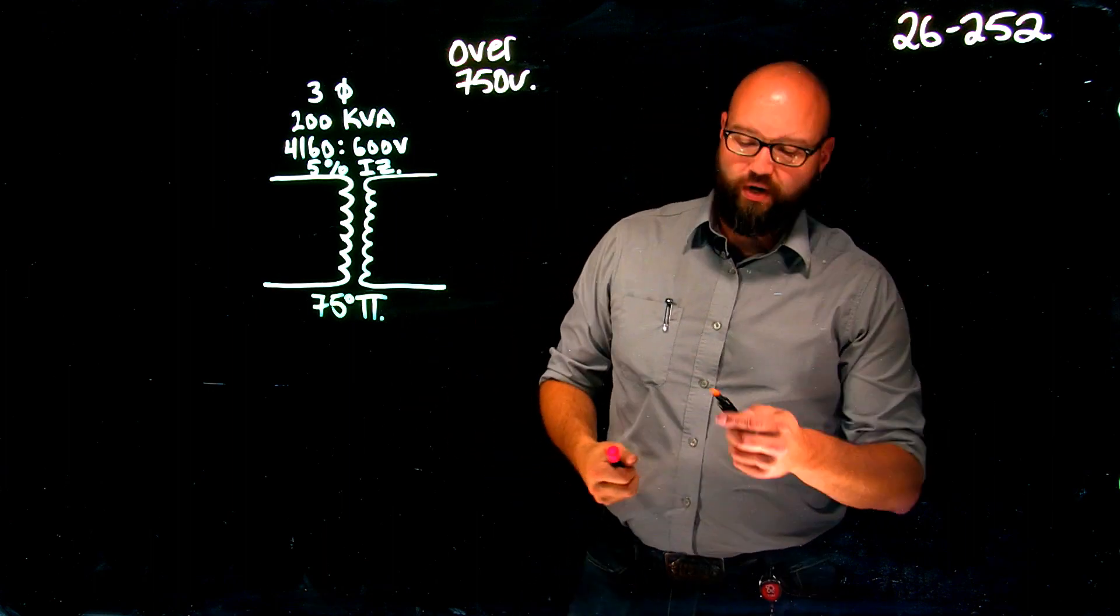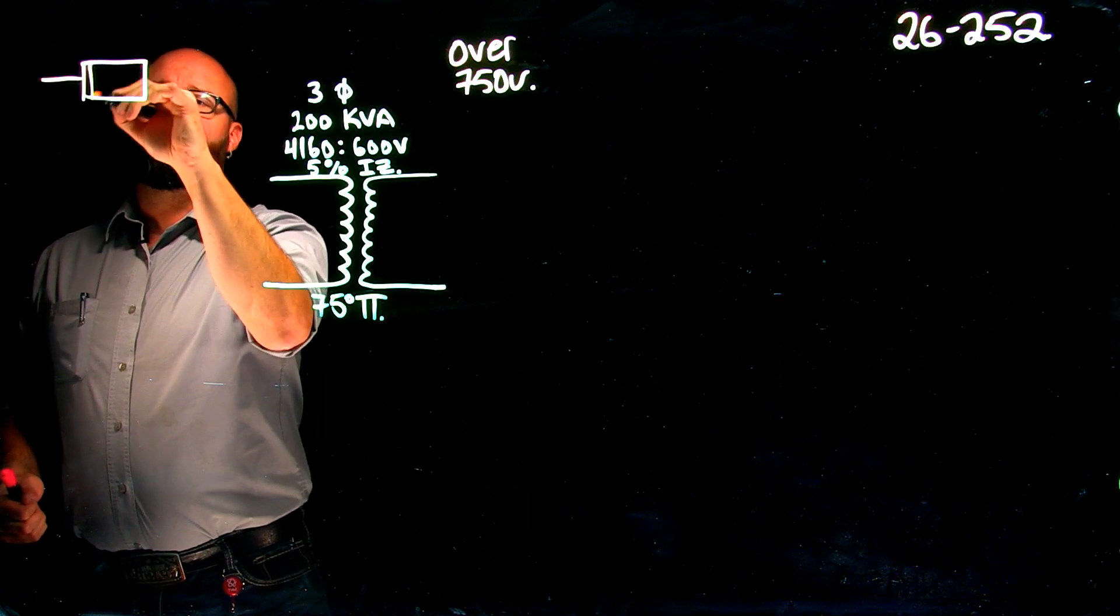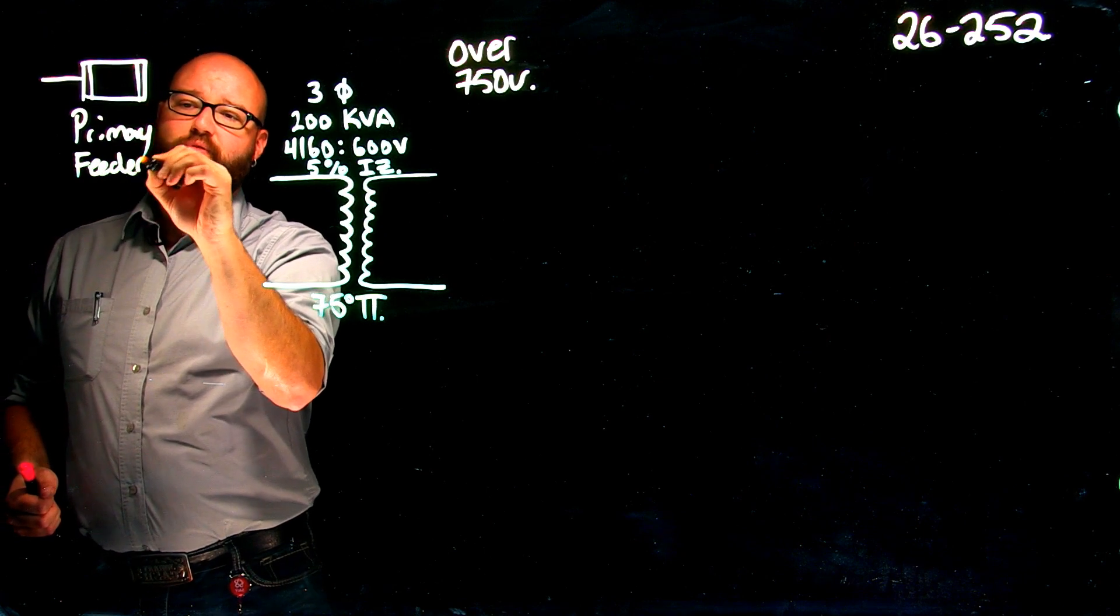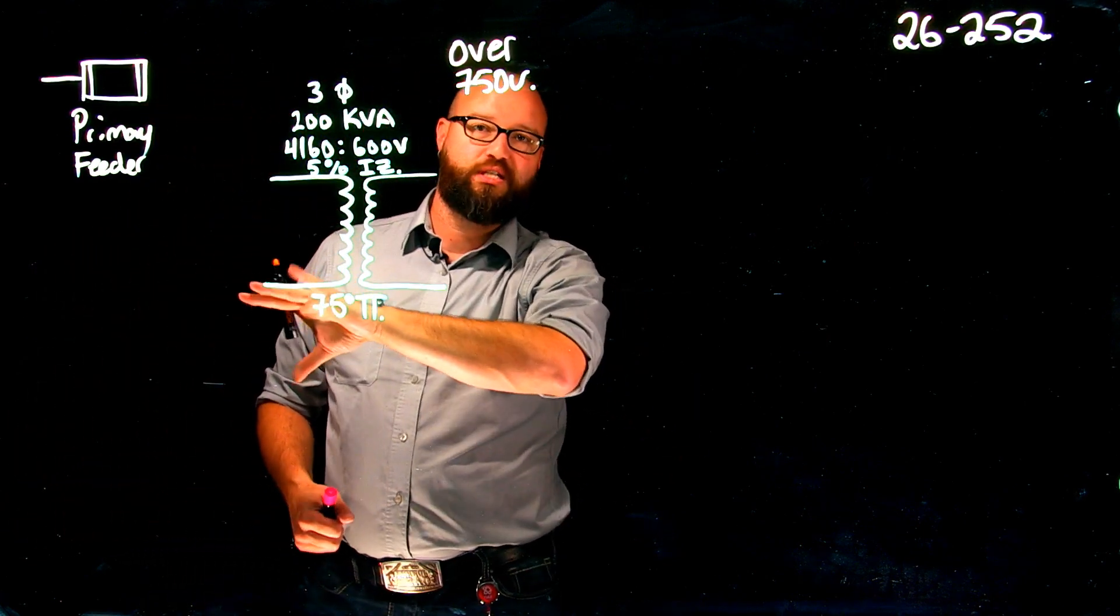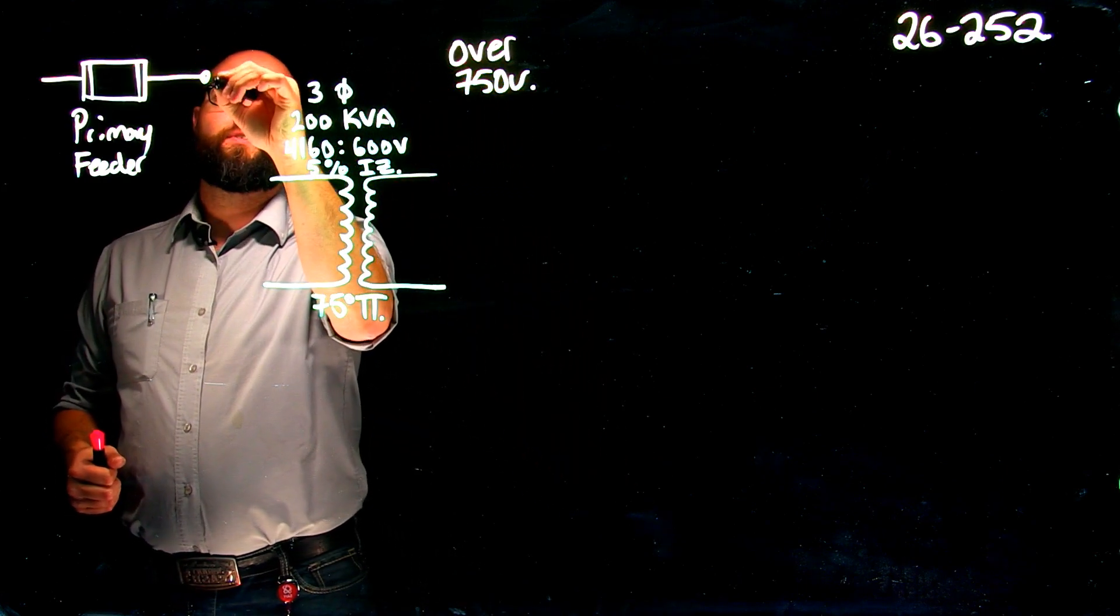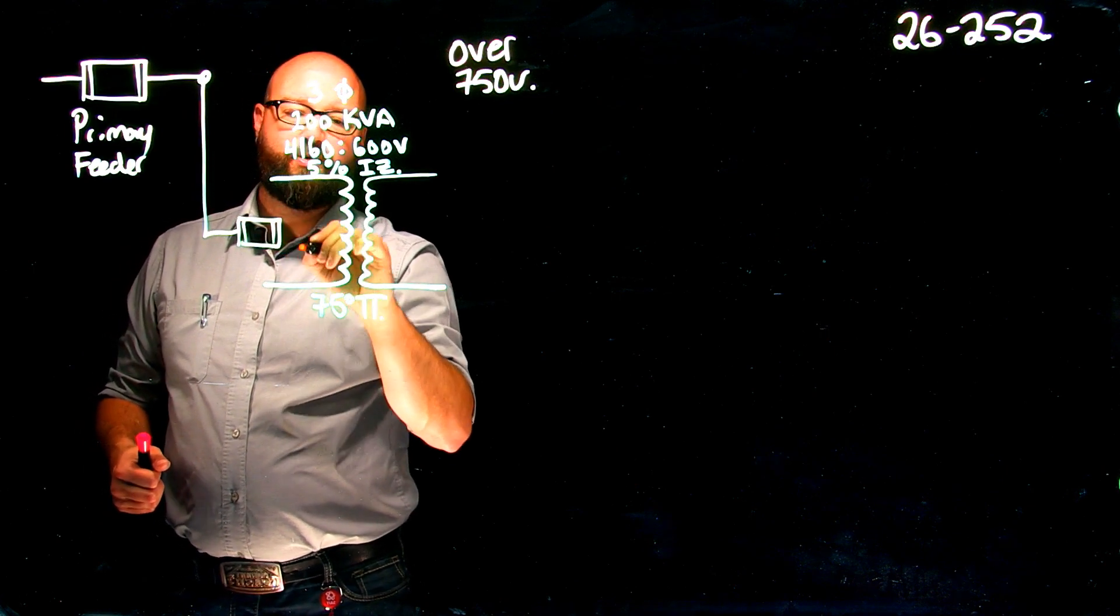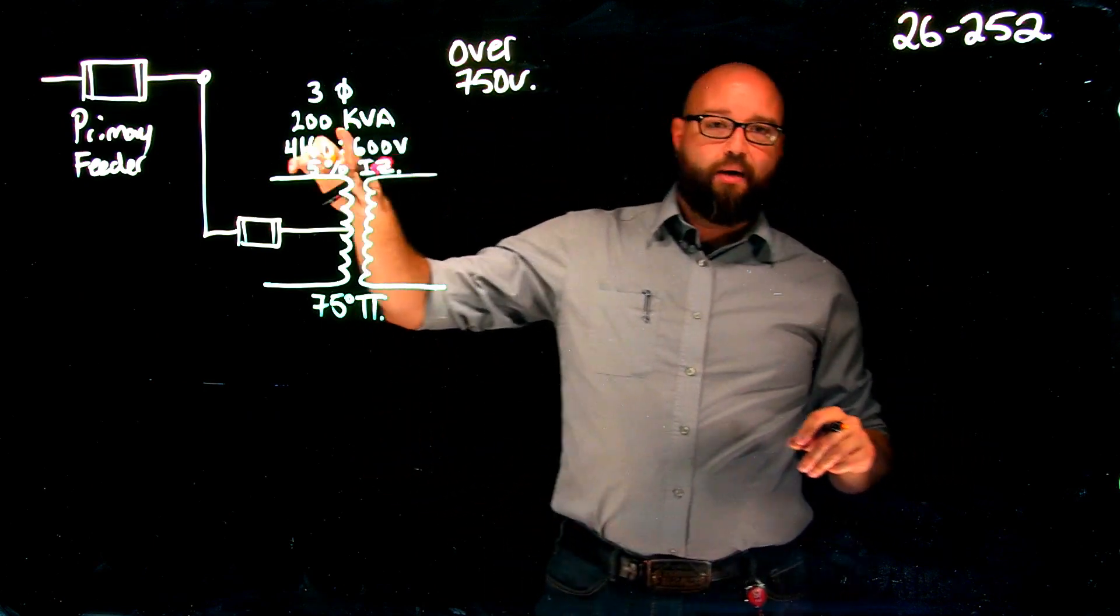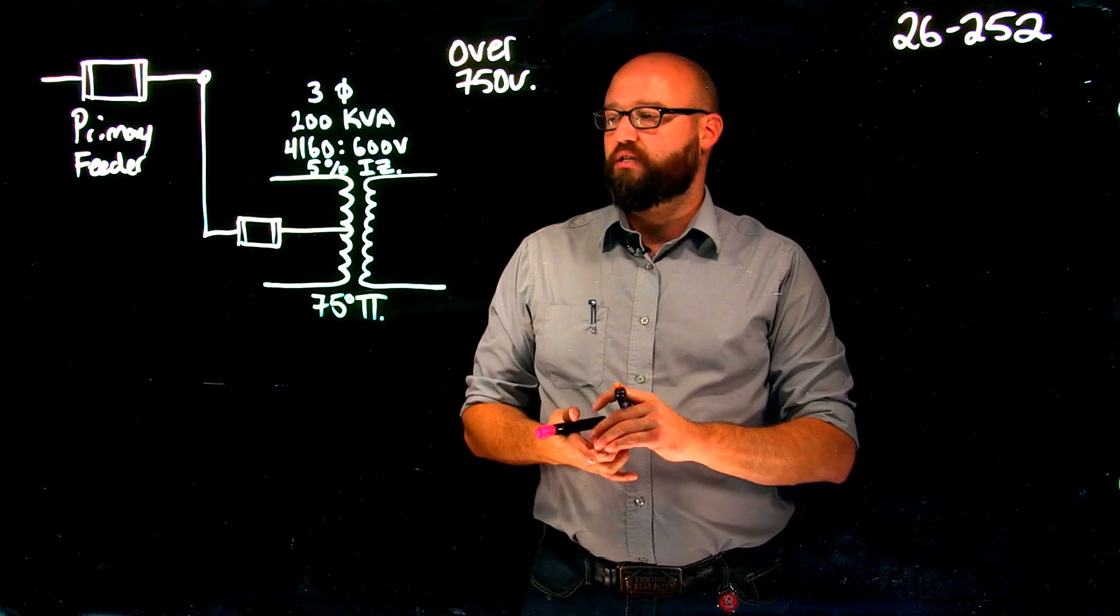Let's look at our first situation. We're going to have our primary feeder protection. We're not going to worry about calculating that in this first step of this video. We are only going to look at what happens if we have primary protection only on our transformer. We'll look at calculating that primary feeder after when we get to our next situation.